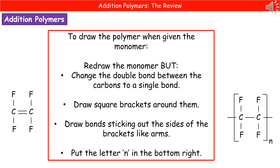The last thing they could ask you to do with addition polymers is to draw the displayed formula. They would give you the displayed formula for the monomer, shown on the left hand side, and ask you to draw the displayed formula for the polymer. We start by copying the monomer with the exception of the double bond — change the double bond to a single. Then draw square brackets around the whole thing. From the carbons at each end, draw two lines sticking out the side like a pair of little arms not holding on to anything. Last, put the letter N in the bottom right corner to indicate this is a repeating unit.